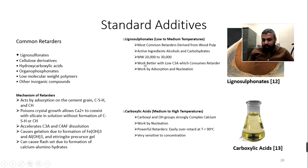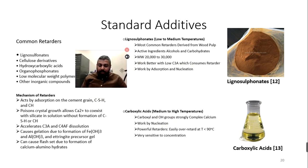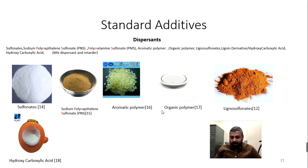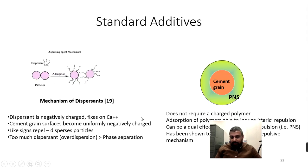Common retarders used for deeper wells — where you need to increase thickening time to prevent the cement from setting before reaching its target — include lignosulfonates and carboxylic acids. For friction reduction and dispersion, standard options include sulfonates, sodium polynaphthalene sulfonate, organic polymers, and lignosulfonates. Reducing friction and viscosity lowers required pumping pressure, saves cost, and avoids fracturing the formation.